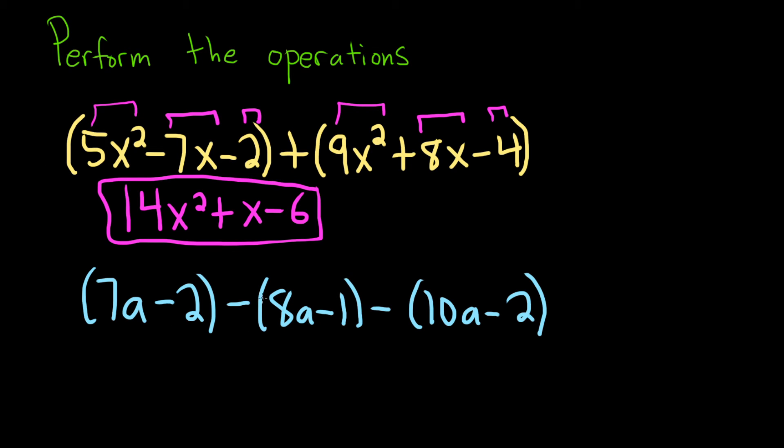For the second part, we have minus signs here, so we do have to distribute. There's an invisible negative 1 here, and there's one here. So let's go ahead and rewrite this. This is 7a minus 2. And the negative 1 times 8a is negative 8a. And negative 1 times negative 1 is positive 1. Here we have negative 1 times 10a, so that's minus 10a. And then negative 1 times negative 2 is positive 2.